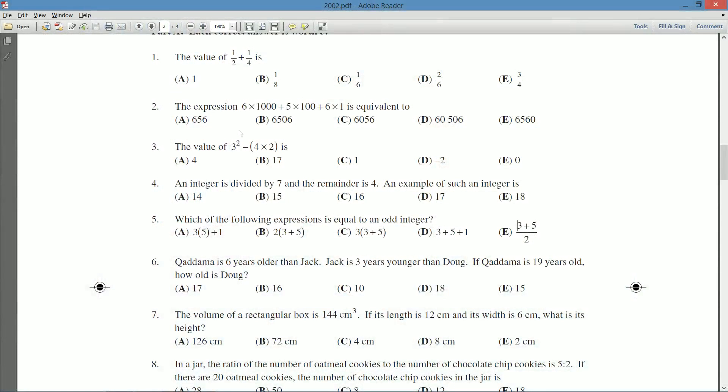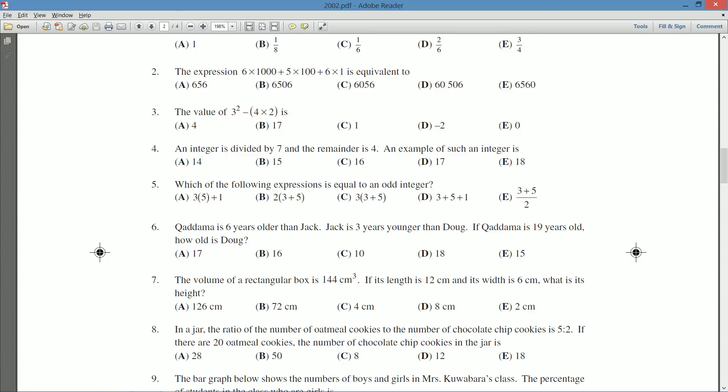Question number four says an integer is divided by seven and the remainder is four. An example of such an integer is... okay, so we're given five possible examples.